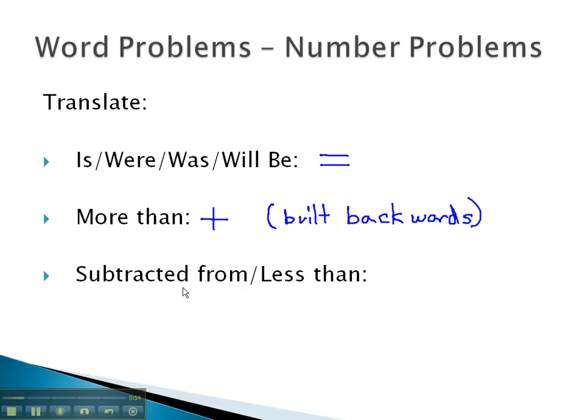Similarly, subtracted from or less than means we subtract, which is also built backwards. Five less than 7 is 7 minus 5.